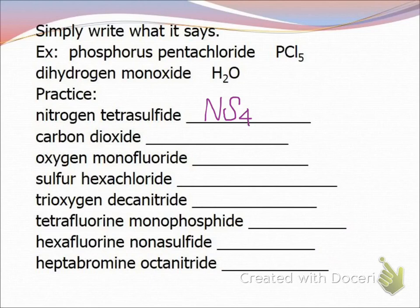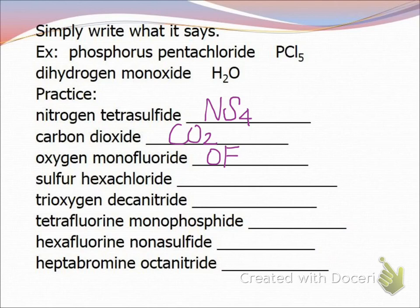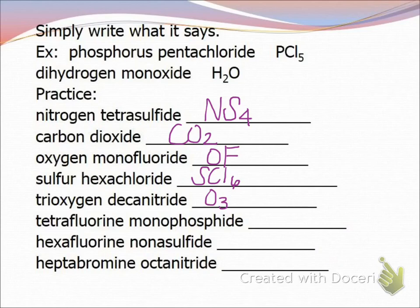Next is carbon dioxide — that one we're pretty familiar with, it is CO2. Oxygen monofluoride would be oxygen with one F, so OF. Sulfur hexachloride — S with Cl6. When writing subscripts for how many atoms, it always has to be down low — don't put it up high, put it down low. Trioxygen means oxygen 3, so O3. Deca nitride is N10. Tetrafluorine monophosphide would be F4P — mono means 1 so we just have a P.